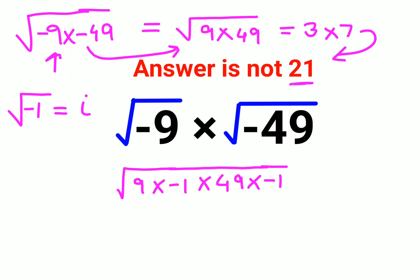So now we will take the 9, which is a perfect square, outside. We will get 3. Then 49, which is also a perfect square, will give us 7. But in the root, you are left with minus 1 into minus 1.